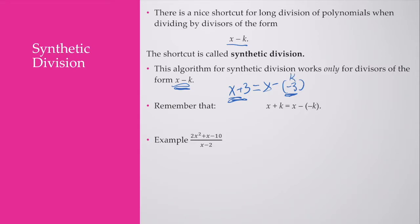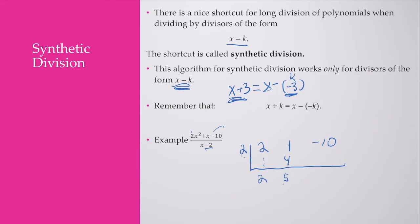Let's work through this example. First, I identify my k — I'm dividing by 2. I put all my coefficients over here: 2, 1, and negative 10. We pull down that first term. 2 times 2 is 4. 1 plus 4 is 5. 2 times 5 is 10. Negative 10 and 10 is 0 — this is my remainder, so there's no remainder. So if I divide 2x squared plus x minus 10 by x minus 2, I'm left with 2x plus 5.